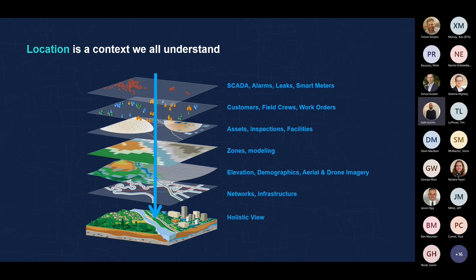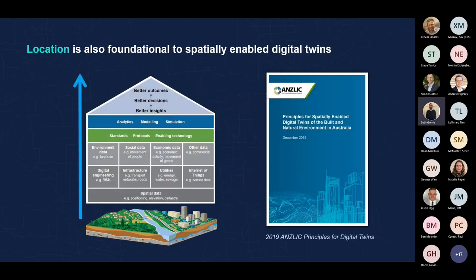GIS enables us to have this kind of top-down holistic view. When we look at how location also assists us in laying the foundations of spatially enabled digital twins, rest assured this is not a new or unique phenomenon. Bodies in the region such as ICSM have been offering principles and thought leadership for many years, which align to global standards. I encourage you to familiarize yourself with the principles of spatially enabled digital twins, albeit from 2019 vintage.